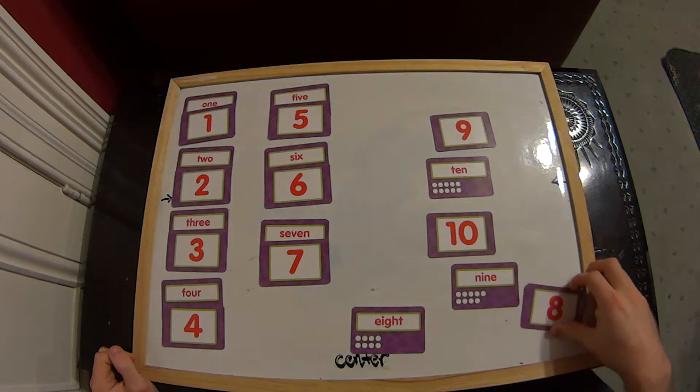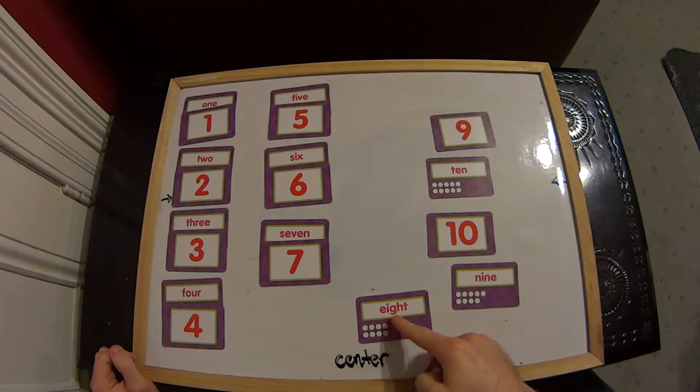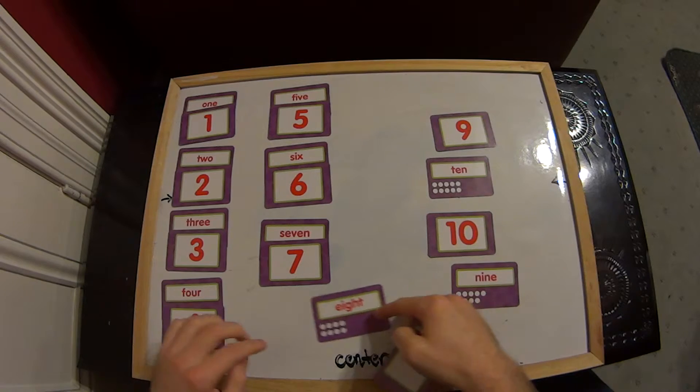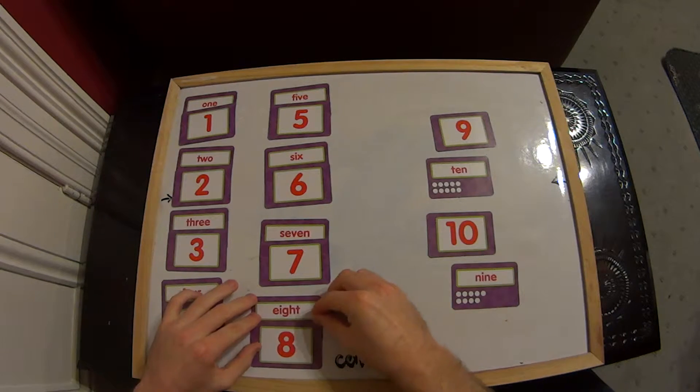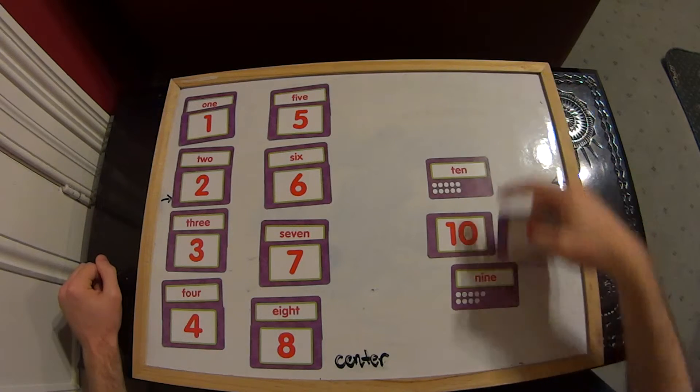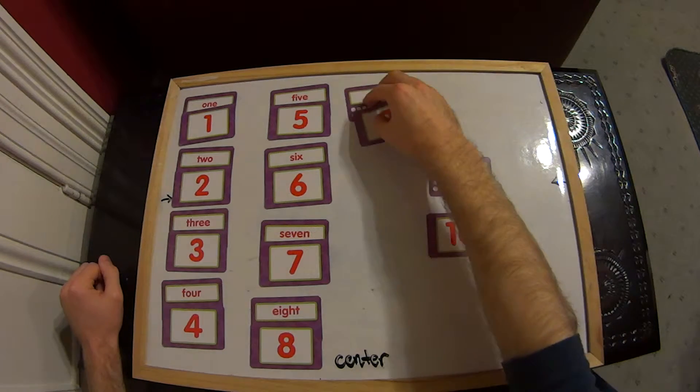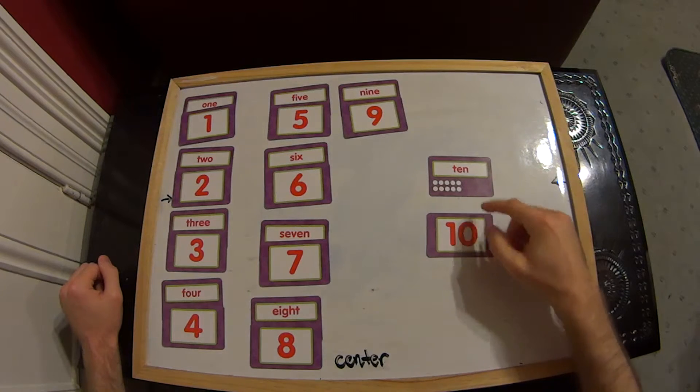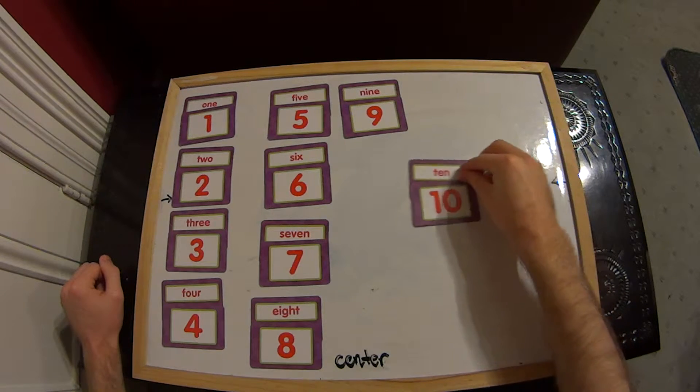Number 8, oh, that's down here, and the word is right next to it, eight. 2 left. So we've got 9, the word 9, and that just leaves our number 10. And of course that goes with the word 10.